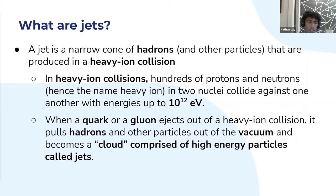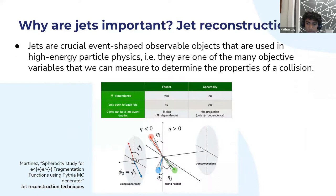These jets strongly interact with things, but they move at such high speeds and energies that they are not absorbed by the surrounding quark-gluon plasma, so we're able to detect them in particle colliders. Heavy ion collisions can also produce many other particles, such as pions, protons, neutrons, their antimatter versions, or even light nuclei such as helium.